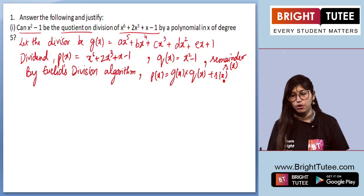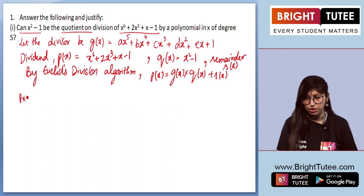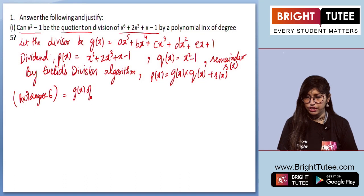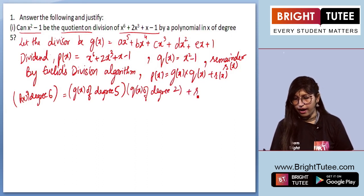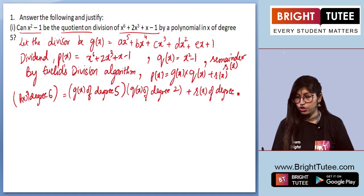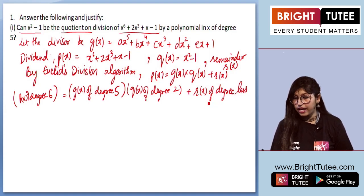Over here if I'll talk about P(x), P(x) will be of degree 6. G(x) is of degree 5 into Q(x) of degree 2, plus R(x) of degree which should be less than 5.